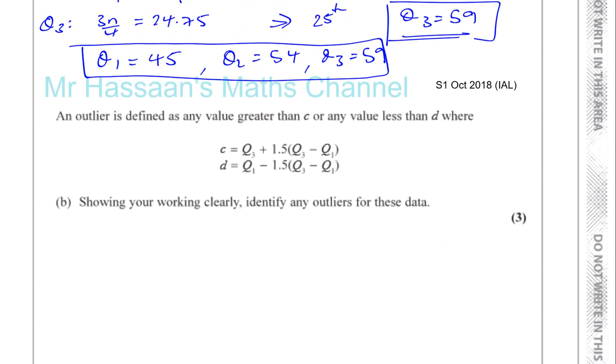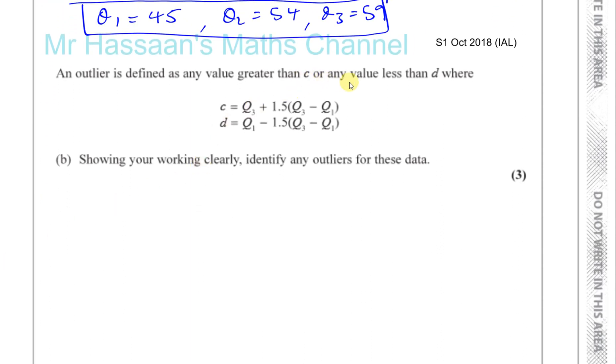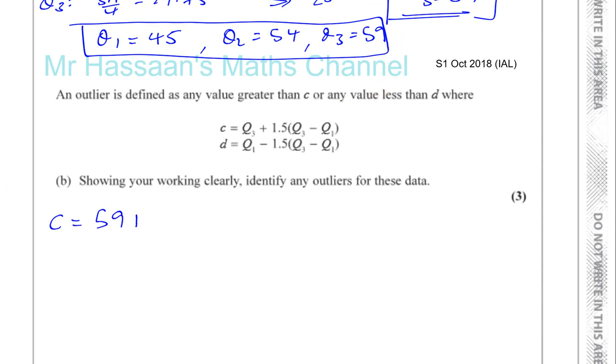Then it says part B. It says an outlier is defined as any value greater than C or any value less than D where C equals. Okay, so that's the upper limit and that's the lower limit of the outliers. Okay, so let's see what C is, which is the upper limit. So you've got Q3, which is 59, plus 1.5 times the interquartile range. Now, the interquartile range is 59 minus 45. Okay, that will give you C. And D will be, okay, Q1, which is 45, minus 1.5 times 59 minus 45. So it's 1.5 times the interquartile range, more than the upper quartile, to give you the upper limit. And 1.5 times the interquartile range, less than the lower quartile, to give you the lower limit.